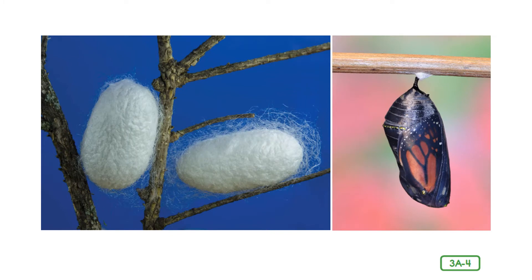Once the larvae have eaten all that they can eat, they take a break. Sometimes people call this next stage a resting stage, but the larvae are hardly resting. A larva often spins a cocoon to protect itself during the pupa stage, when it will remain quiet and still for several weeks. Inside this shell-like covering, the pupa transforms or changes into something that looks altogether different than before. Some insects have a soft cocoon for the pupa stage, and some, like the butterfly, have a harder case called a chrysalis.